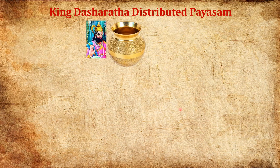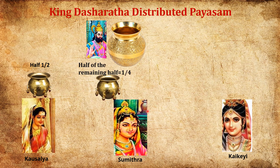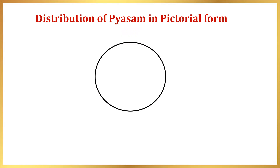As per the shloka, let's see how King Dasharada distributed the sweet rice, or Payasam, to his three wives — Kaushalya, Sumitra, and Kaikeyi. The first line tells us Dasharada gave half of the Payasam to Kaushalya, and half of the remaining half — that is, one-fourth — to Sumitra. Then half of the remaining portion, which is one-eighth of the original, was given to Kaikeyi for the sake of his son. On further thinking, he gave the remaining one-eighth portion to Sumitra. In this manner, the king divided and distributed the Payasam among his wives.